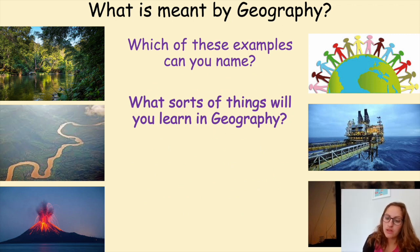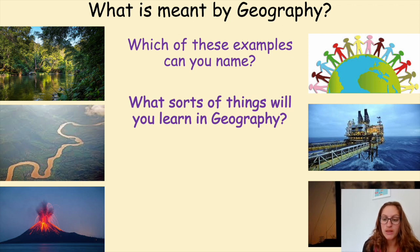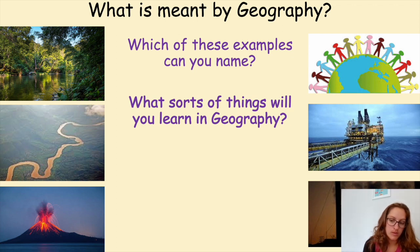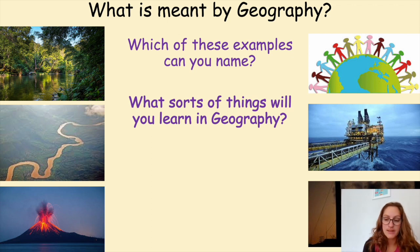We're going to think about what you might learn in geography at Chobham. I've put six images on the board — you can only see five because one of them is where my head is. For each picture, what do you think you might study? A clue: on the left are the physical things, on the right are all the human things. You've got 10 seconds left.